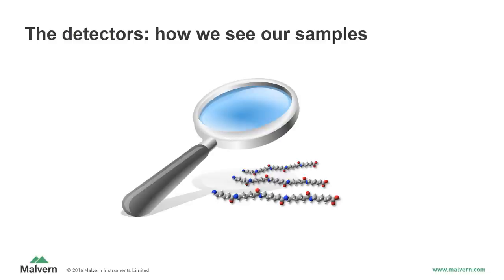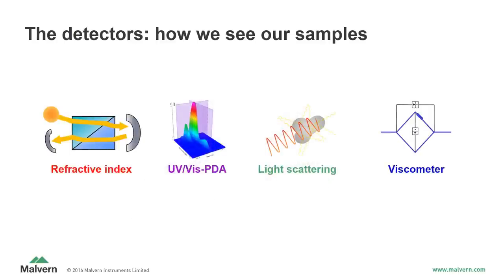After the GPC column set does all of the hard work involved in the separation process, we need some way to observe the effects of the chromatography. This is where the detectors come in. The detectors are individual devices that respond to different characteristics of a sample. The more detectors we use, the more information we can learn about a sample. The most common detectors used in GPC are a refractive index detector, a UV-VIS or photodiode array detector, a light scattering detector, and a viscometer detector. Various combinations of these can be used depending on the specific data desired.